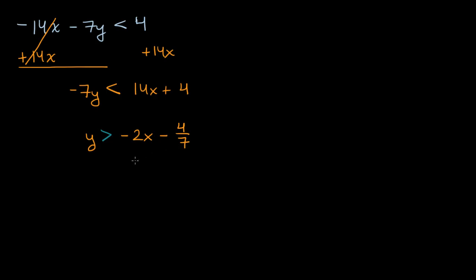And the way that I would graph this, I would graph y is equal to negative 2x minus 4 sevenths. But since we're not greater than or equal to it, I would put a dotted line there and just shade everything above that. But let me just do what I'm talking about.